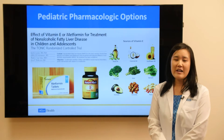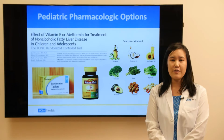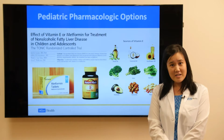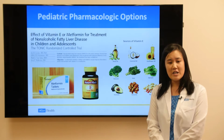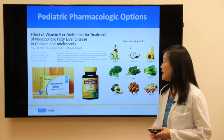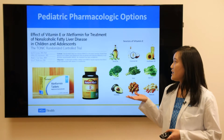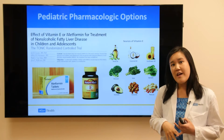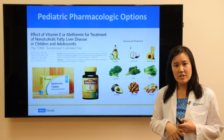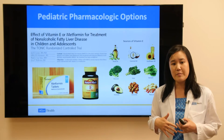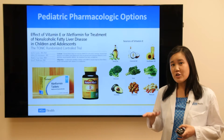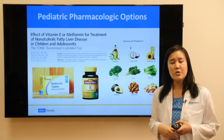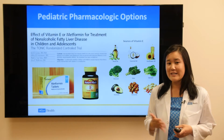Unfortunately, we do not have proven effective pharmaceutical agents that can fix or reverse fatty liver. Studies in pediatrics looking at two medications, specifically metformin and vitamin E — known as the TONIC study — showed that both metformin and vitamin E were no more effective than healthy lifestyle changes and weight loss in decreasing fatty liver. However, some gastroenterologists or pediatricians might use metformin to help with other comorbid conditions, including diabetes.